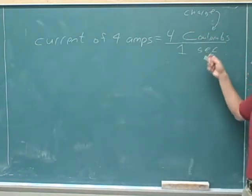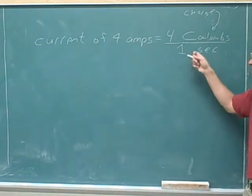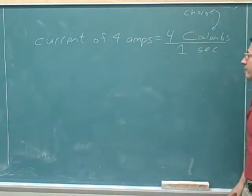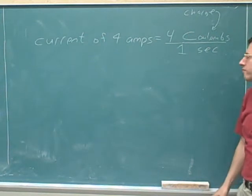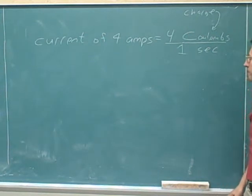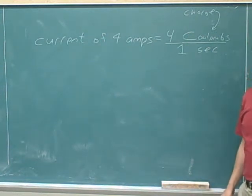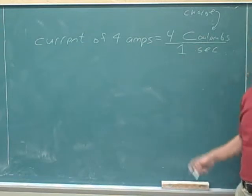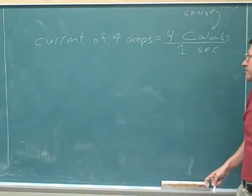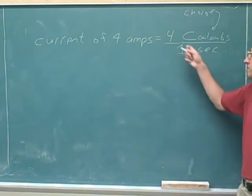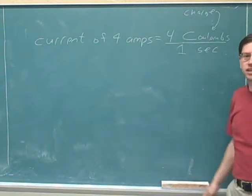It tells us how many Coulombs per second are moving past — 4 Coulombs of charge are passing in one second. Again, this is hypothetical. It doesn't mean that we're actually running the experiment for only one second. It just tells us how much charge we would get if we did run it for one second.